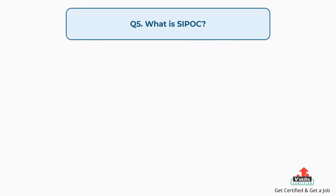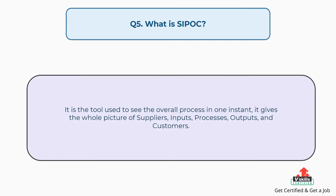Question number five: What is SIPOC? It is the tool used to see the overall process in one instant. It gives the whole picture of suppliers, inputs, processes, outputs, and customers.